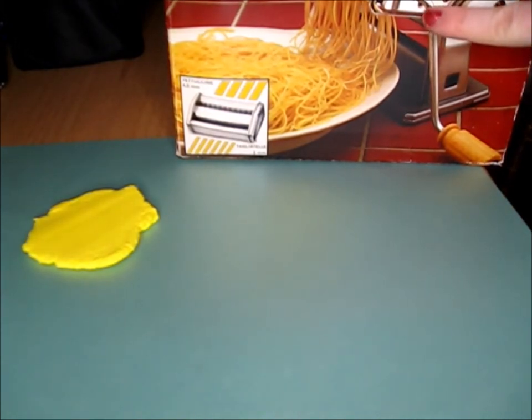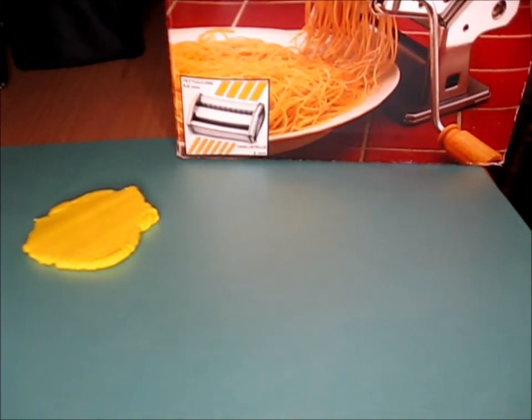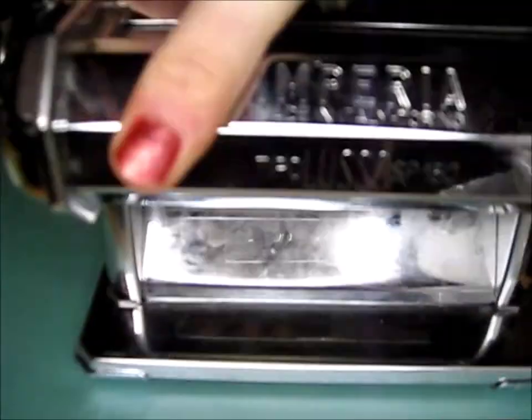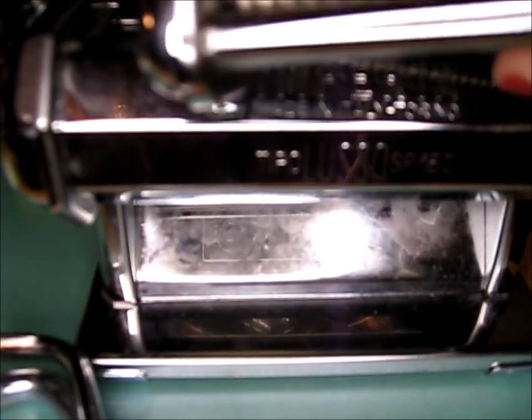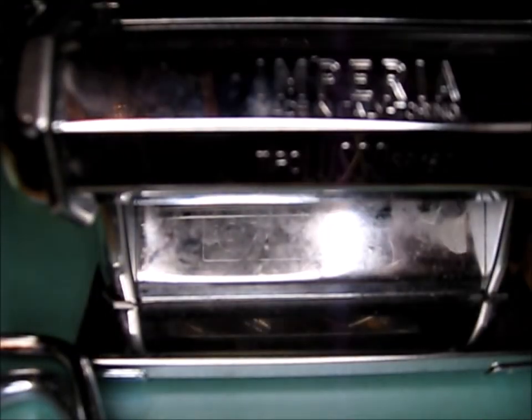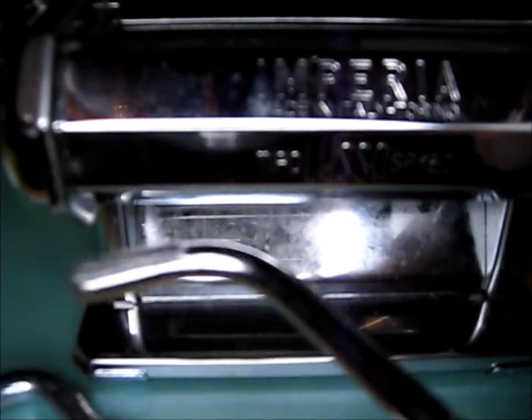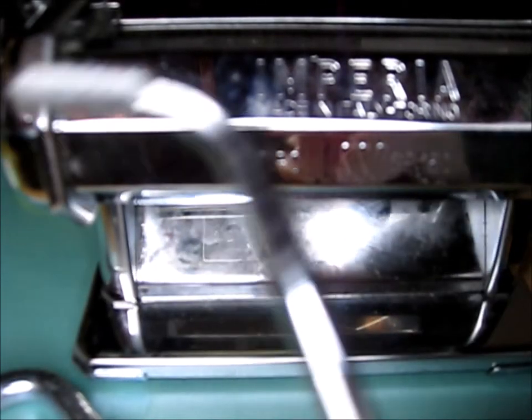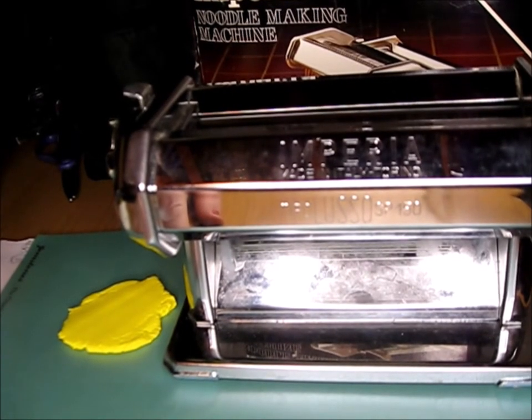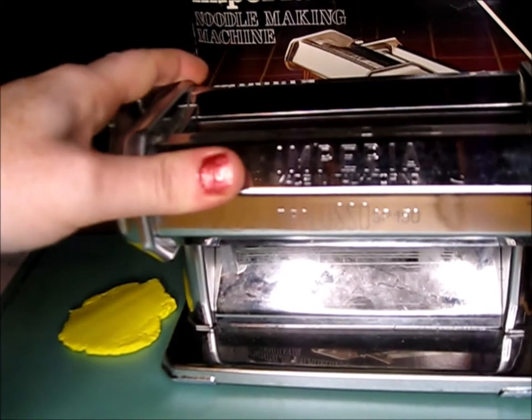The last option I have for rolling out thin pieces is my pasta maker. Here is my handle to crank it out and my clamp to hold it onto the table. Insert the crank and make sure it is clear of anything that will stop it.